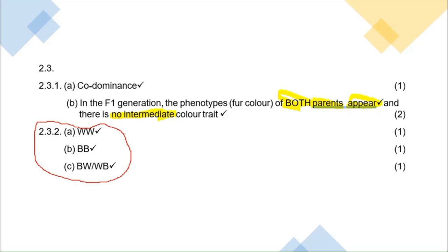You might wonder what happens if you wrote BB and W — that is technically not correct because you'd be looking at polyploidy, where you have too many chromosomes. So stick with one B and one W for the offspring. That's the genotype for question 2.3.2. Now moving on to question 2.3.3.